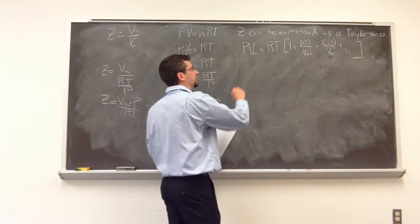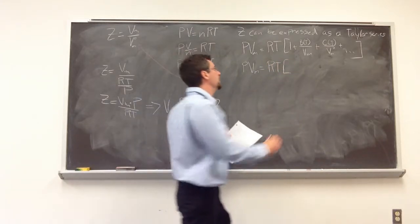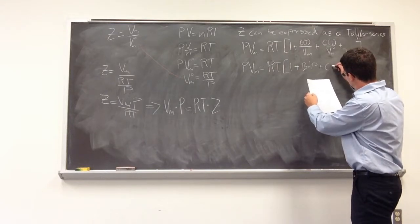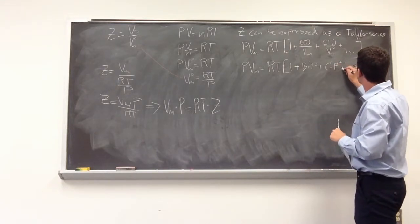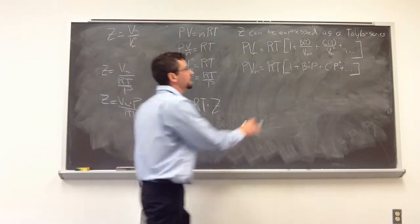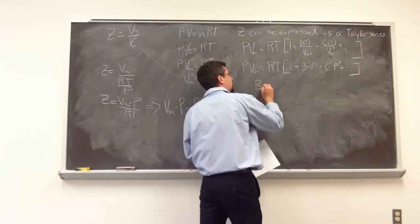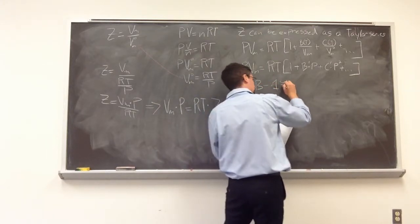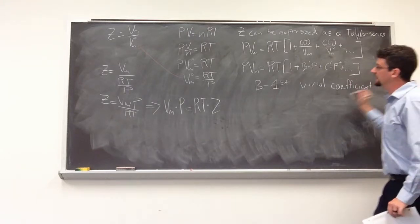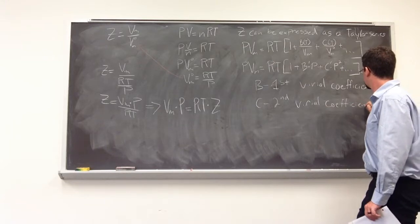And they can also be expressed, not only in terms of molar volume, but also in terms of pressure, in which case, these constants are different. We're going to denote them with a prime. So, we'd have 1 plus B prime times P plus C prime P squared, and so on. And an important point is the temperature is very important in this case. These constants depend on the temperature. So, they will change with corresponding temperature. So, B would be considered the first virial coefficient, and C is considered the second virial coefficient.